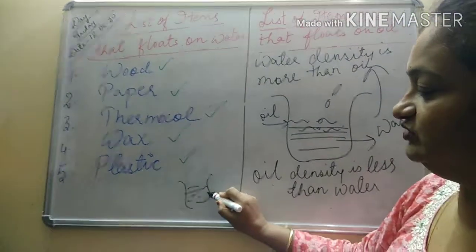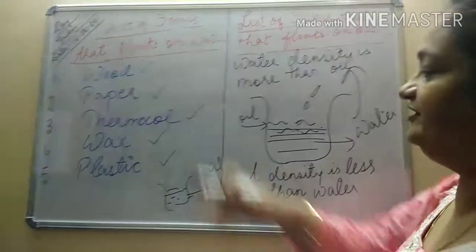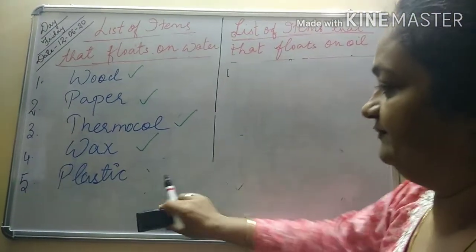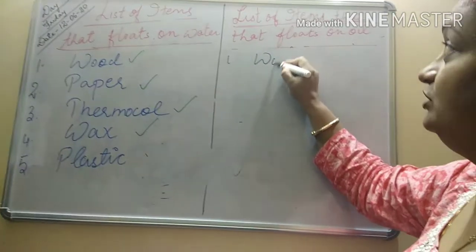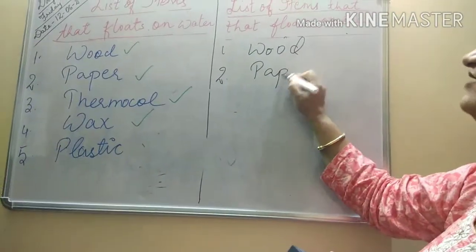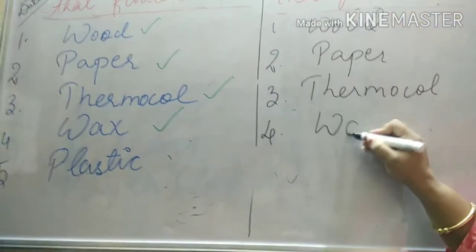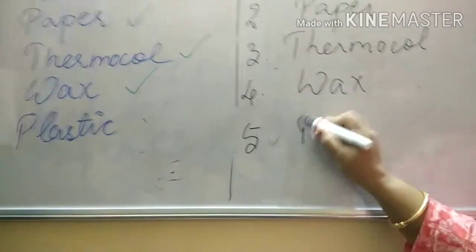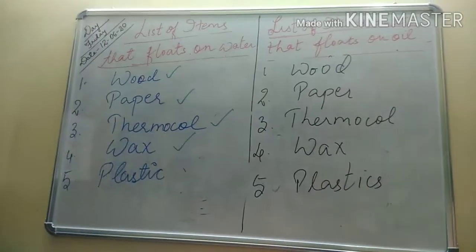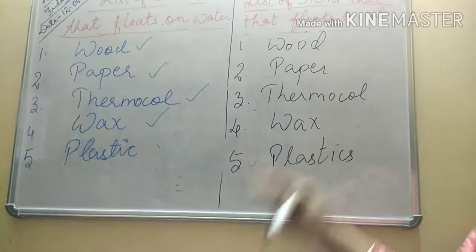These materials — wood, paper, thermocol, wax, and plastic — they all float on water, so they will definitely float on oil. You will copy down the same answer. Number one: wood — does it float on oil? Yes. Second: paper — yes, absolutely correct. Third: thermocol — yes, absolutely correct. Fourth: wax — yes. Fifth: plastic — yes. Whatever floats on water will float on oil, because water density is more than oil.